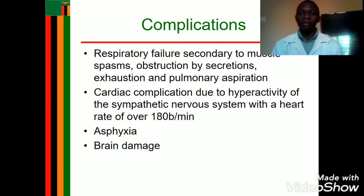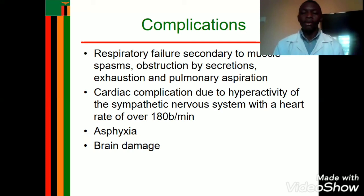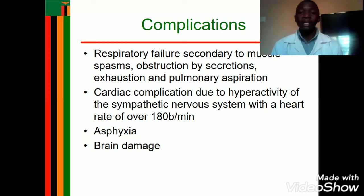Complications of tetanus include respiratory failure arising from muscle spasms, obstruction of the airway by oral secretions, and pulmonary aspiration. Cardiac complications may arise such as a raised pulse due to hyperactivity of the sympathetic nervous system. Asphyxia may occur due to impairment of oxygen supply to the lungs. Brain damage can result from reduced oxygen supply to the brain or severe inflammation caused by invasion of Clostridium tetani into the central nervous system.